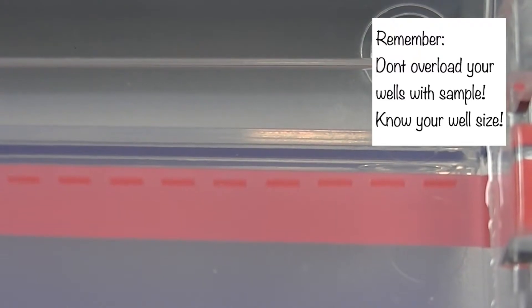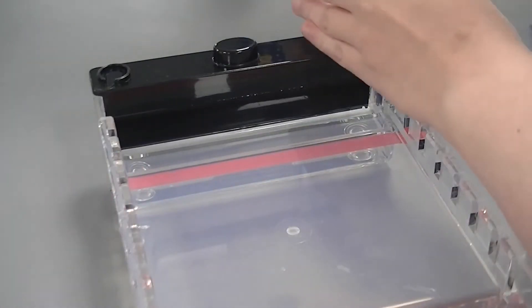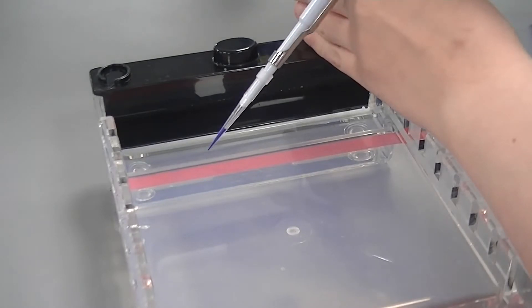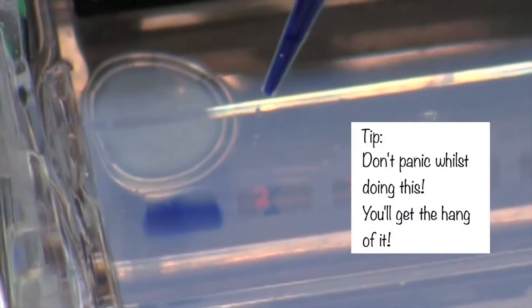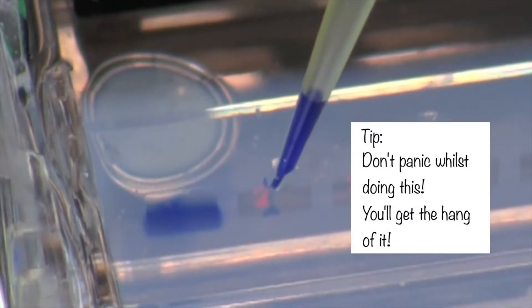Before loading your sample, ensure you have a comfortable hand position and steady hand. When loading your sample, place the tip of the pipette into a well and slowly eject your sample. The glycerol in your loading dye means the sample will sink to the bottom of the well.